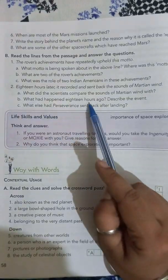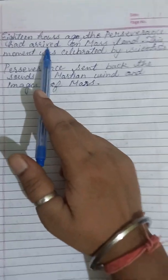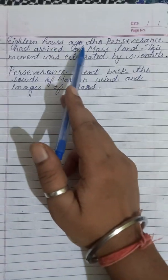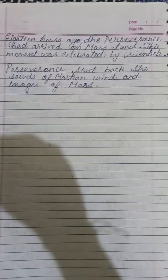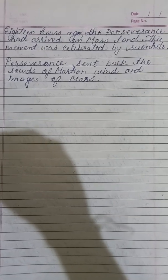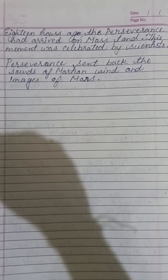The second question: what had happened 18 hours ago — describe the event. 18 hours ago, Perseverance had arrived and landed on Mars. This moment was celebrated by scientists.